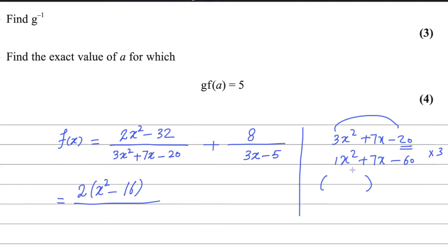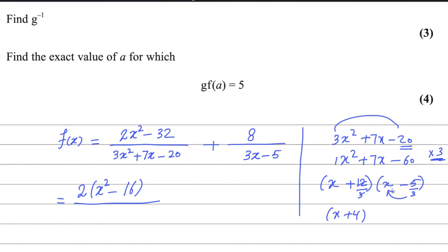Now you can easily factorize this expression with 60. We choose the pair that produces the middle term: plus 12 and negative 5. 12 times negative 5 equals negative 60, and 12 minus 5 gives the middle number 7. Because we multiplied by 3, we divide back by 3. We simplify 3 and 12 to get x plus 4, and shift the 3 to give 3x minus 5. This is one way of factorizing.